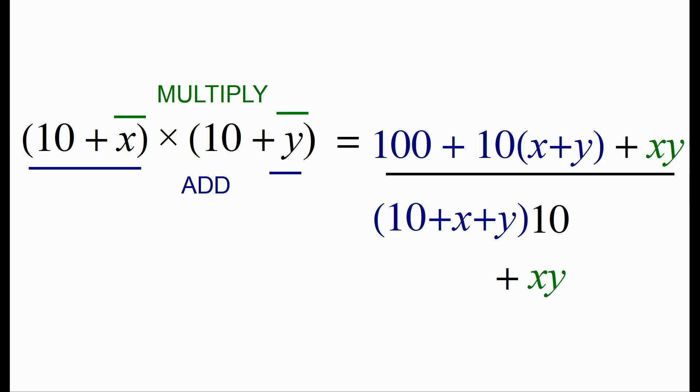The final step was to add these together. So doing some algebra, the first step would give us 100 plus 10 times the quantity x plus y, and the second step in green gives us x times y. So this is the algebraic result of our process.